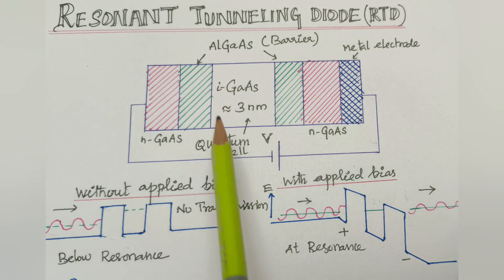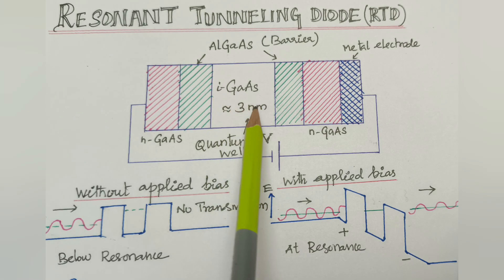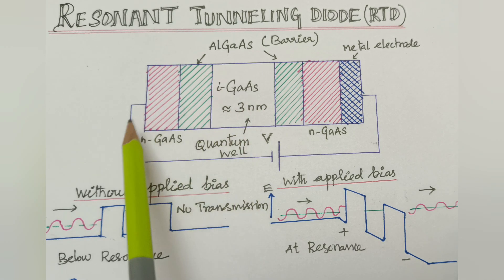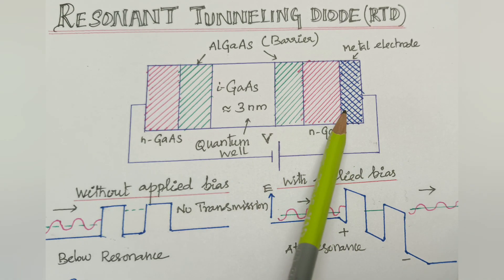Then, Intrinsic Gallium Arsenide, which is approximately 3 nanometers, very very thin materials. So here, Intrinsic Gallium Arsenide acts as a quantum well, which is confined with sufficient energy. And here, the metal electrode is connected with the positive terminals.